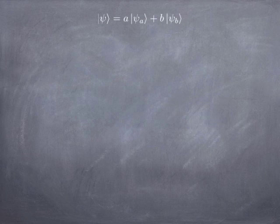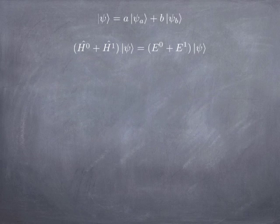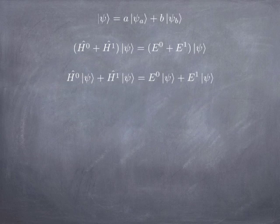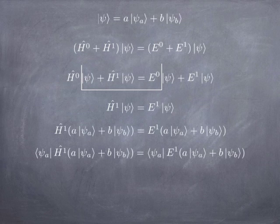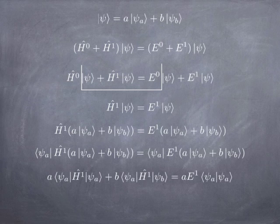You can imagine what happens if we add a perturbation to the original Hamiltonian. We still have the eigenvalue problem, but we can throw away the unperturbed part because it already solves its own eigenvalue problem. What we get is a new eigenvalue problem with the perturbation acting on the superposition equal to the first-order correction to the energy times the superposition. If we factor out H1 and take the inner product with psi A, we get this equation.